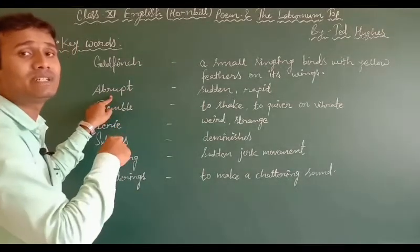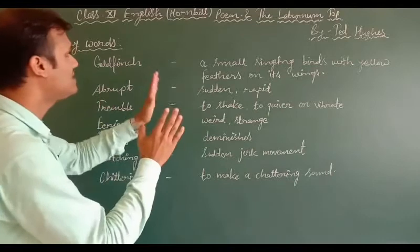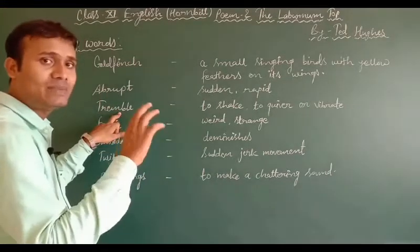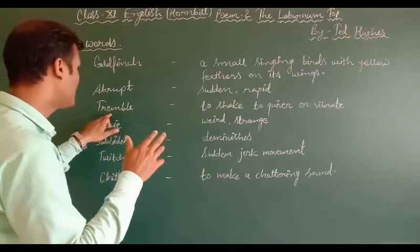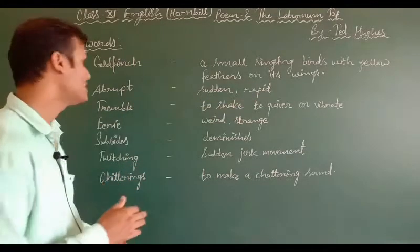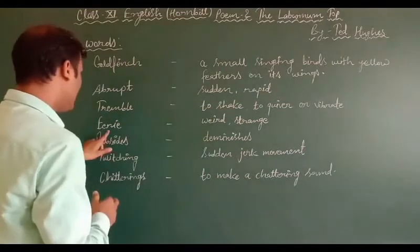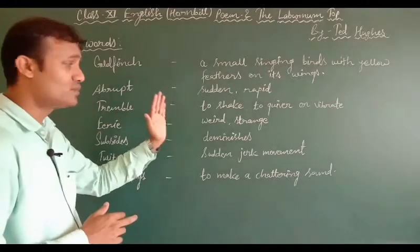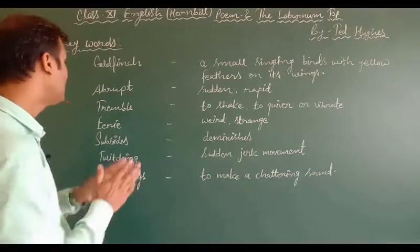If you say 'abruptly', it means suddenly. The next word is 'tremble' — if something is trembling, it means it is shivering or quivering; tremble means to shake, to quiver, to vibrate. 'Eerie' means weird or strange — if something is weird or strange, that is called eerie.